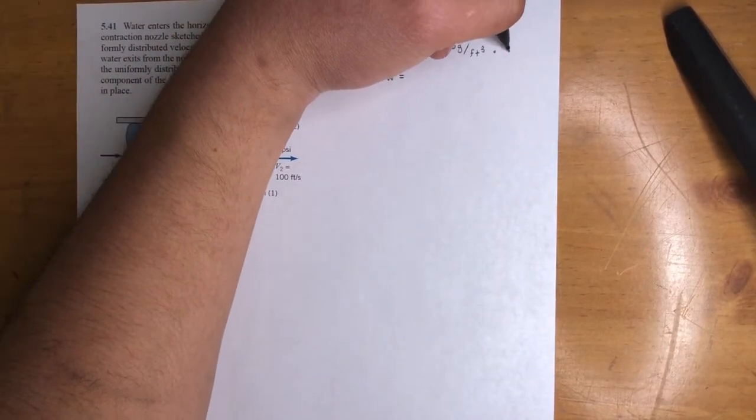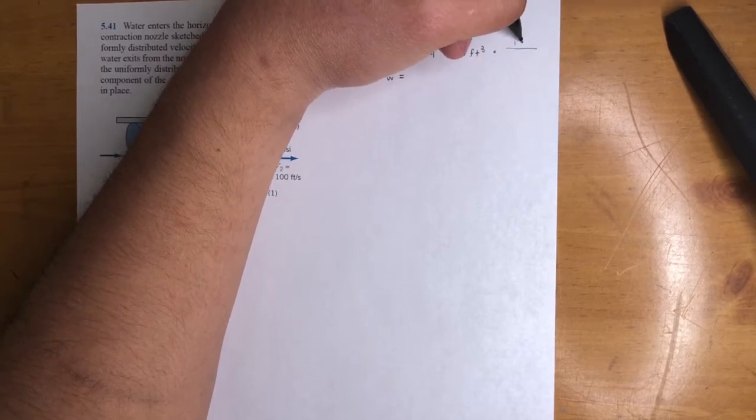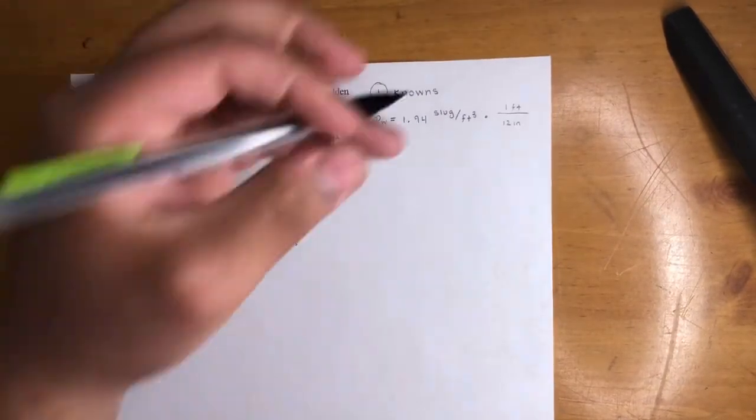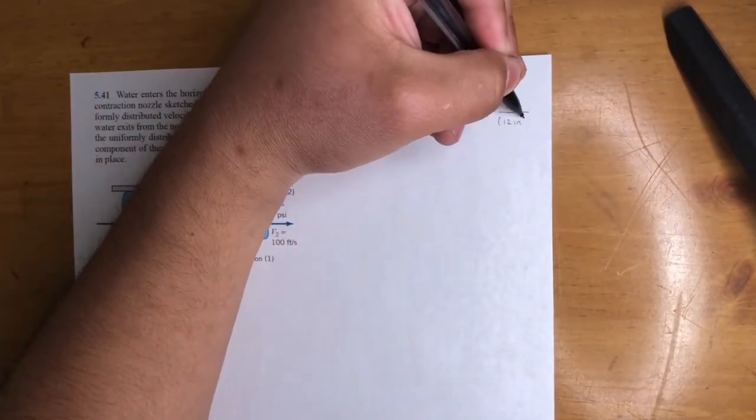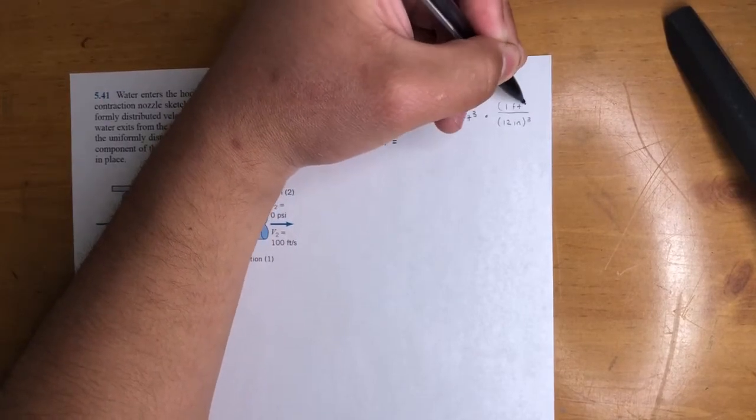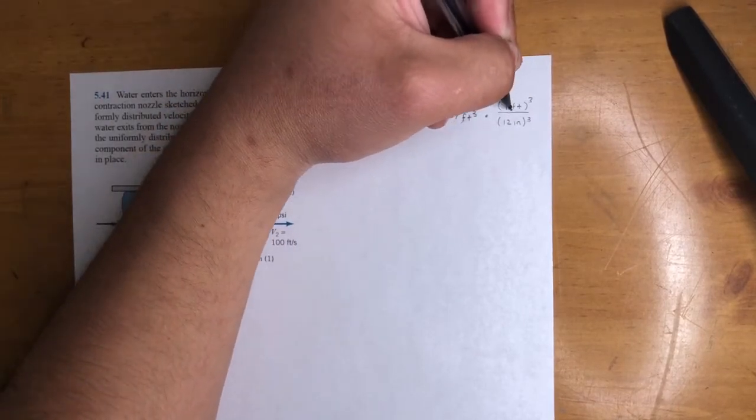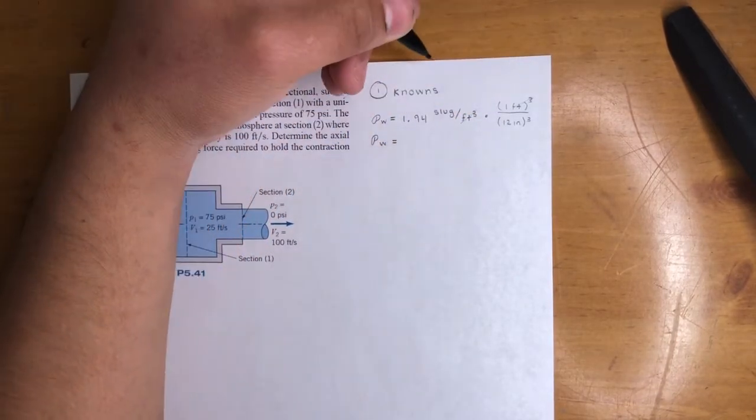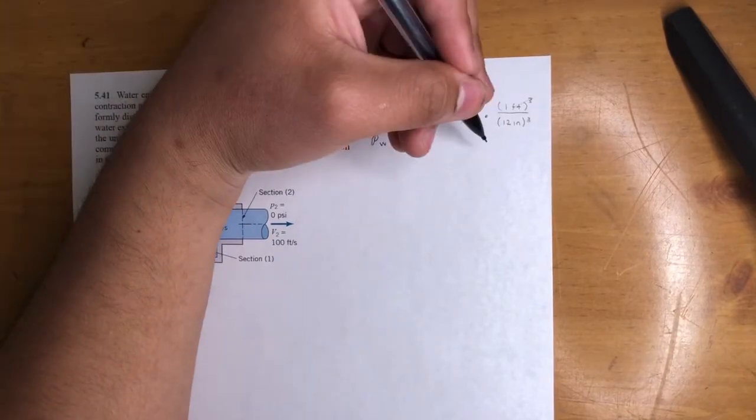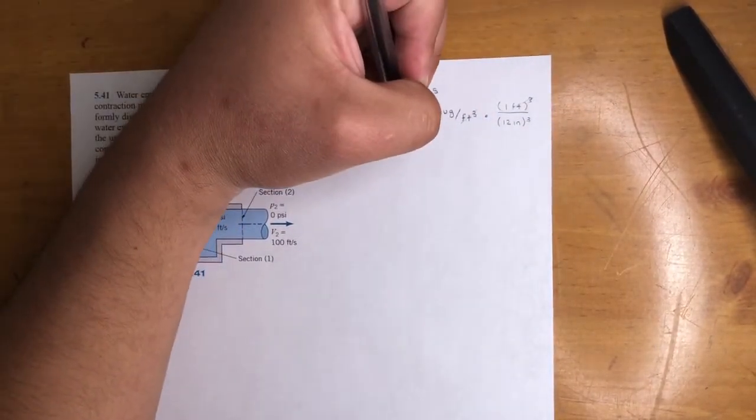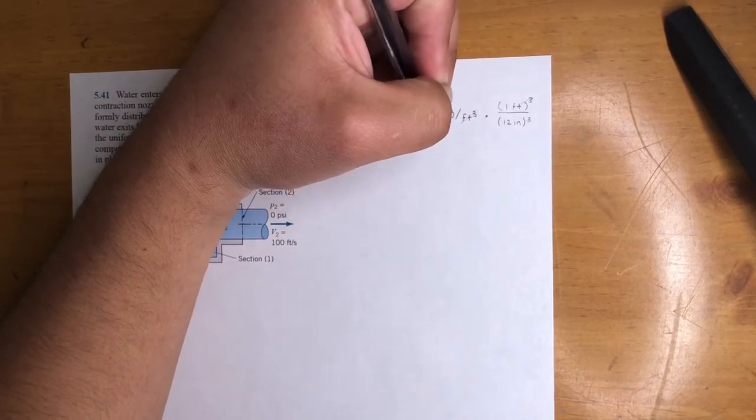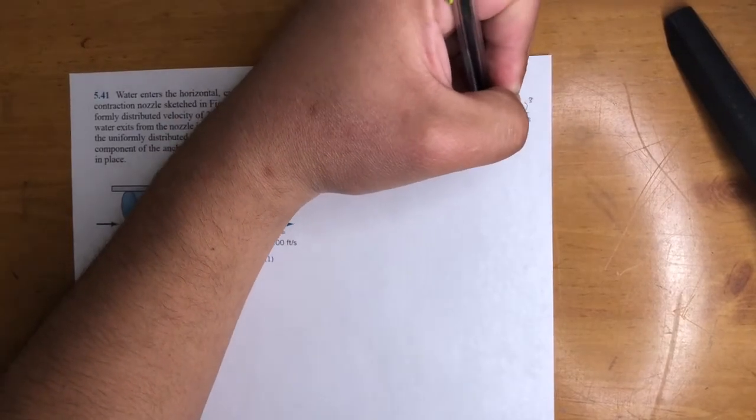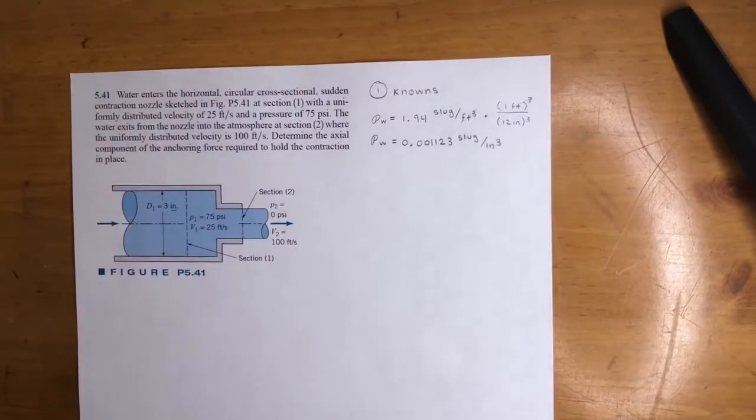So if you multiply this by feet, it's going to be up top. 1 foot is 12 inches. Then we got to cube it because this is cubed. So the feet cubed cancel out with this feet cubed. And you divide this number by 12, then by 12, and then by 12 again, three times. So your new density is 0.001123. This is slugs per inch cubed. So that's that conversion.